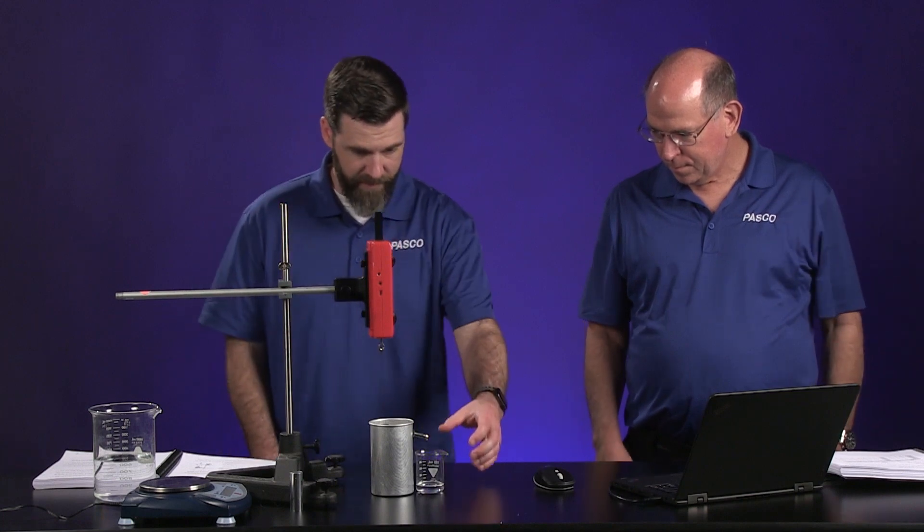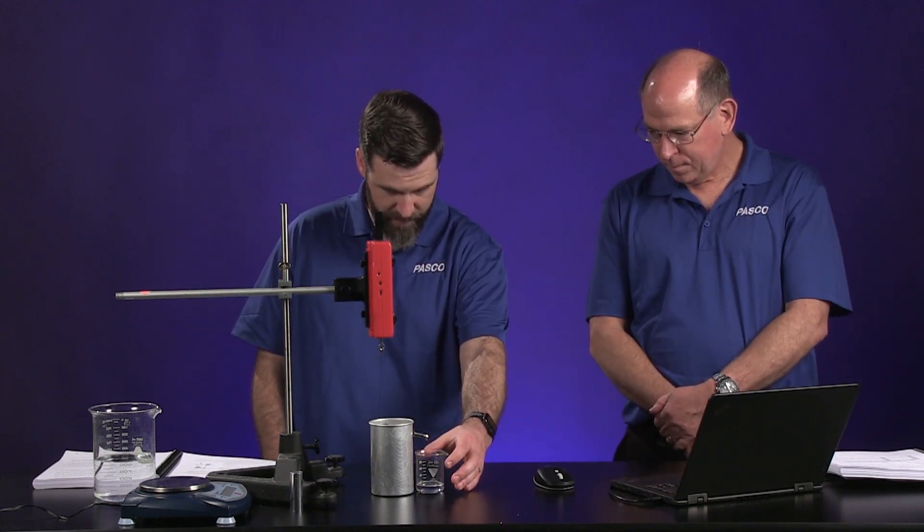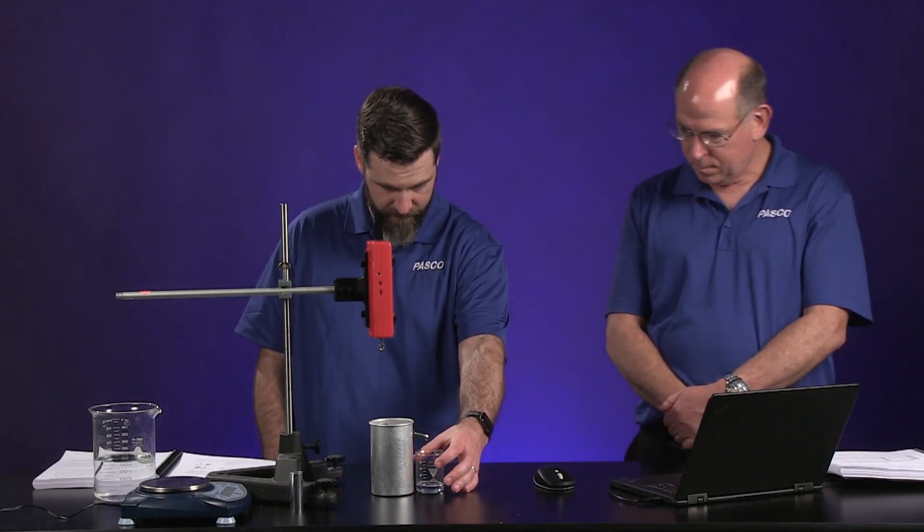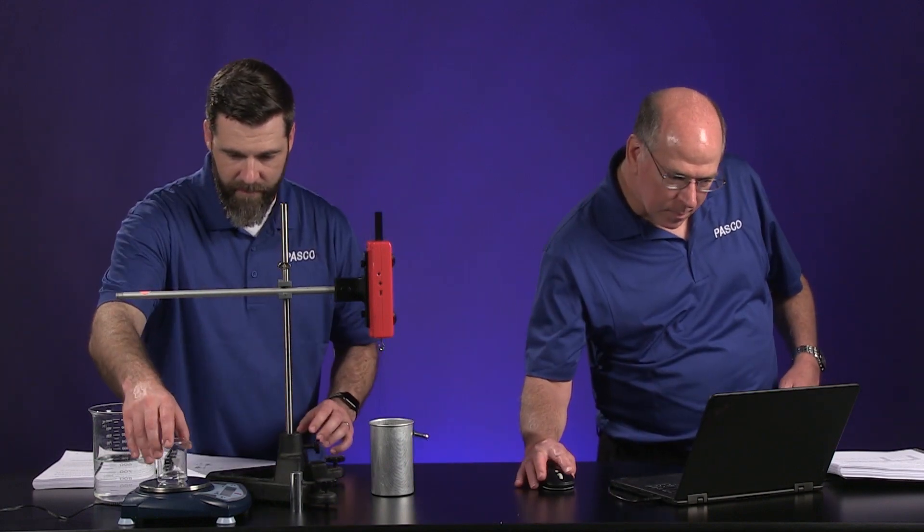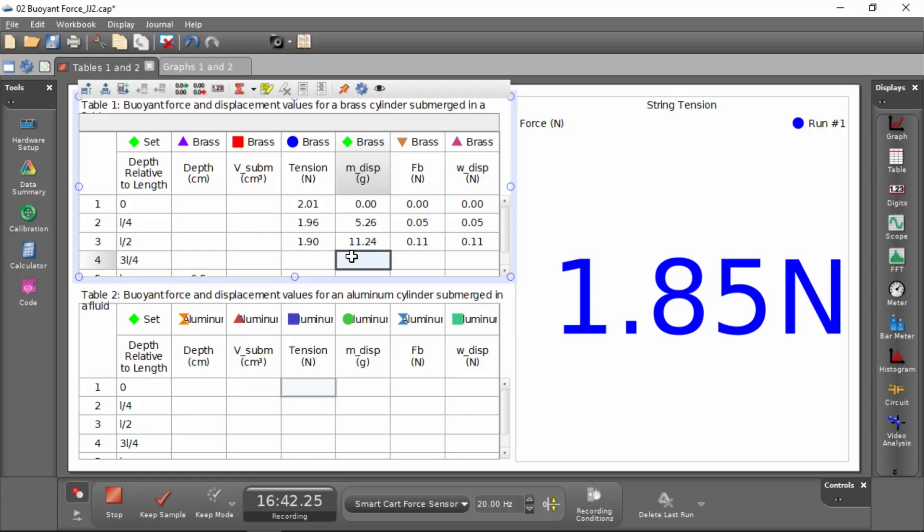There we go, that'll get that out there. As soon as it drips, we'll go ahead and take it. This mass is 16.76. Okay, I've got that entered, and the tension is 1.84.